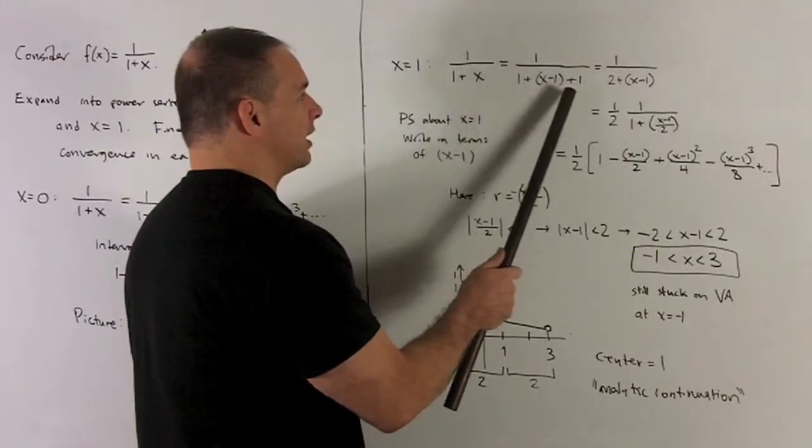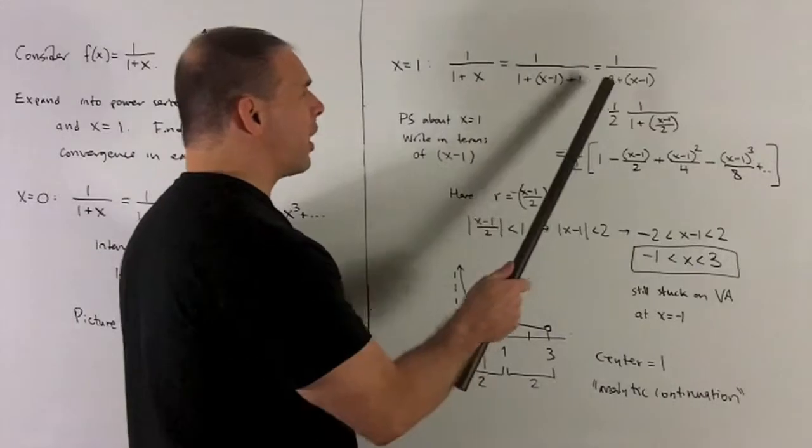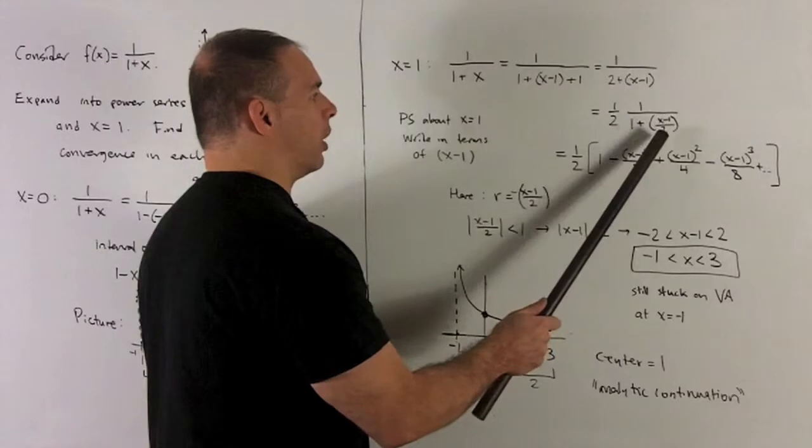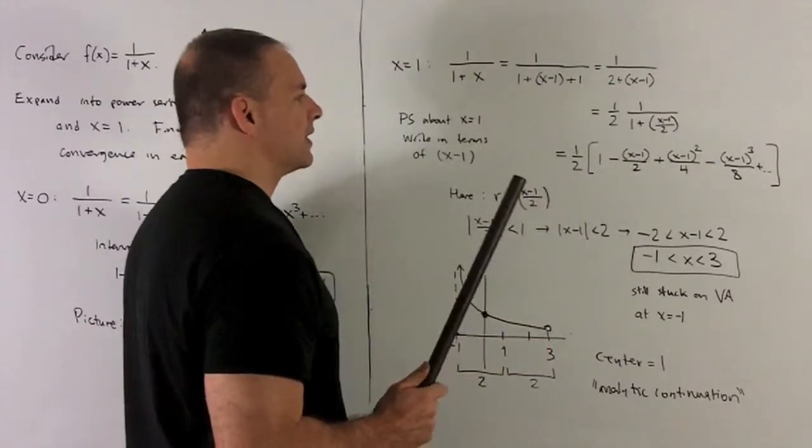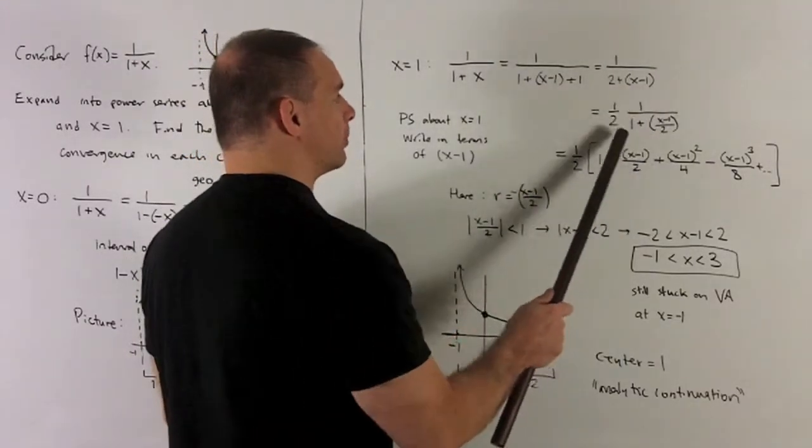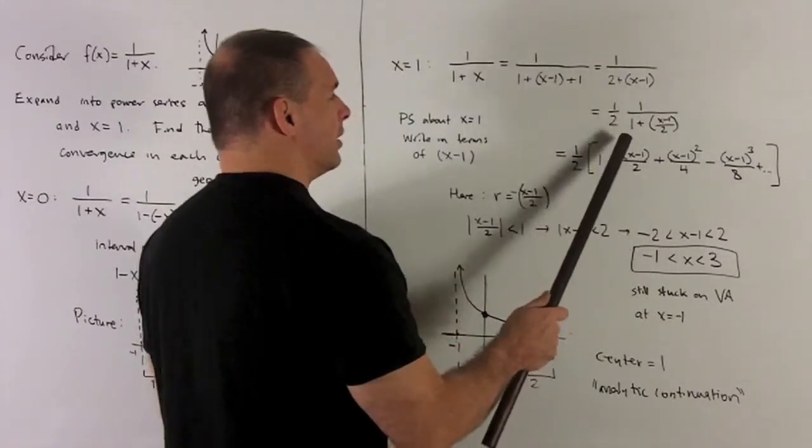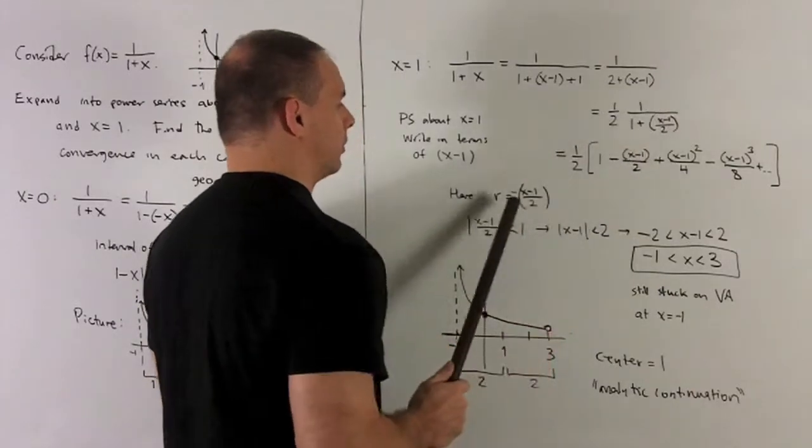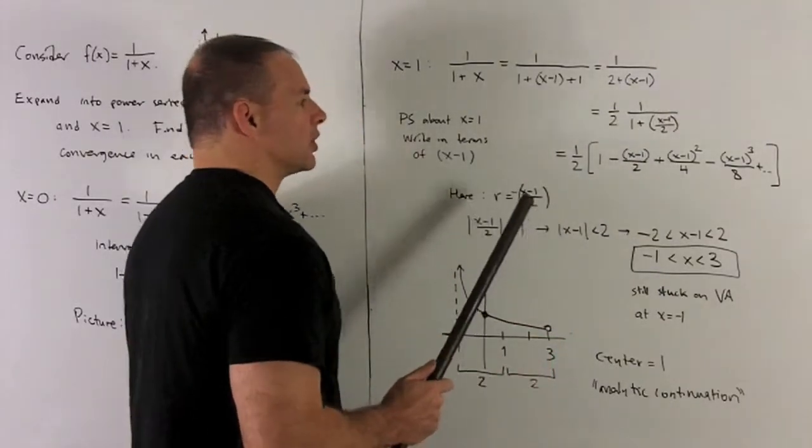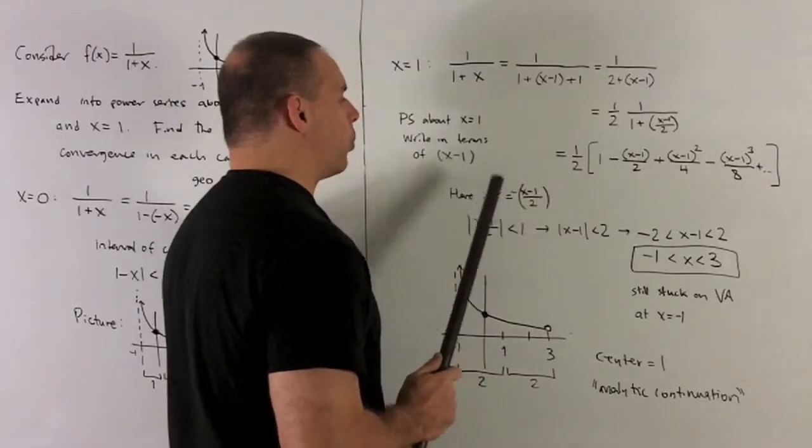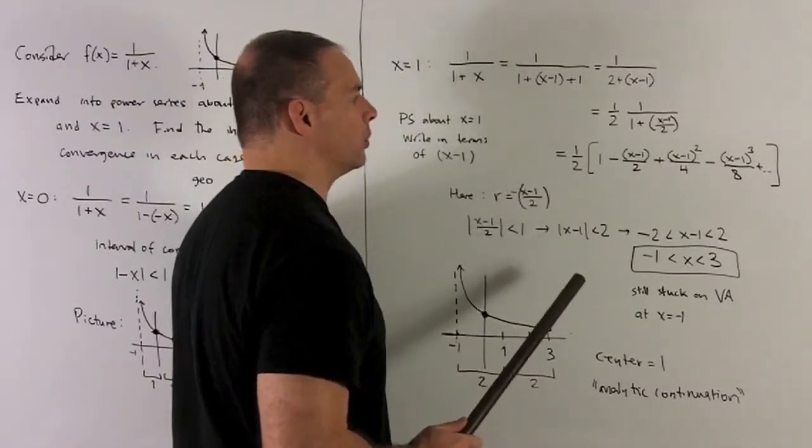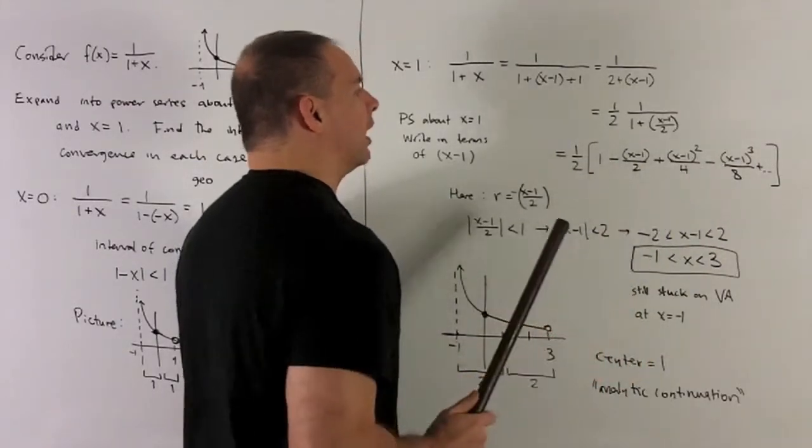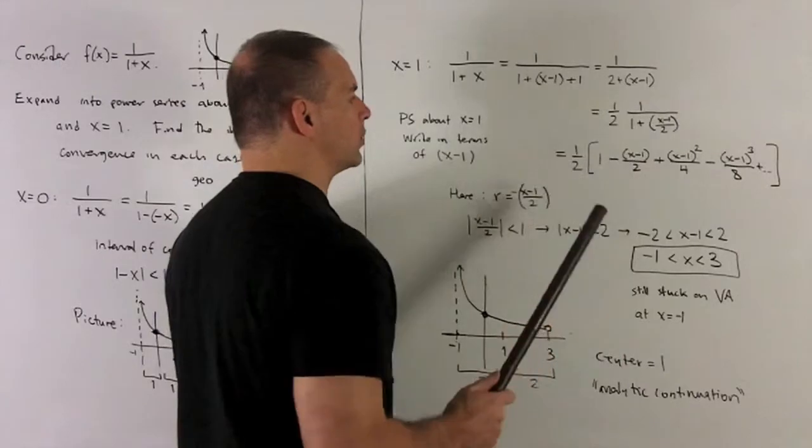The trick will be: I'll turn x into x minus 1 plus 1. The 1s collect to give me 2 plus x minus 1. Now I can factor a half out to get 1 over 1 plus (x minus 1) over 2. In terms of power series, this is 1 over 1 minus minus (x minus 1) over 2. I can expand this as 1 plus r plus r squared plus r cubed, which gives me the first few terms. It'll alternate in sign and have powers of (x minus 1) over 2.